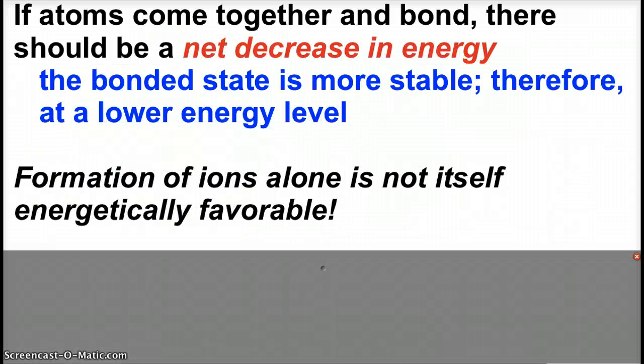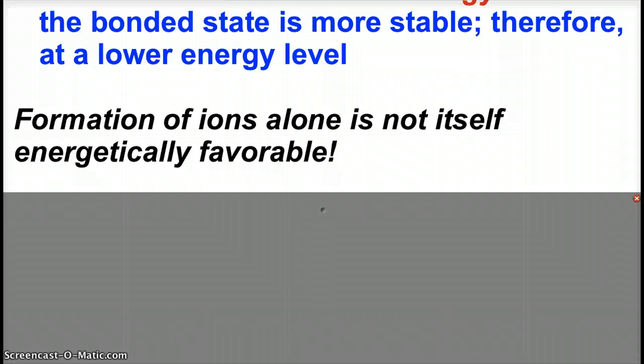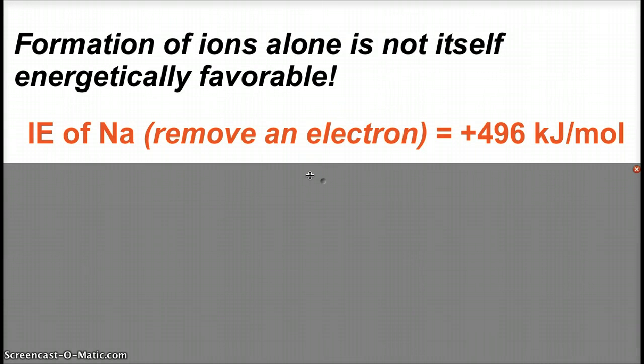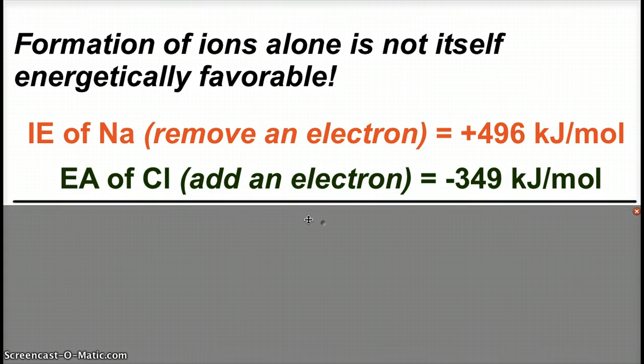Now, if atoms come together in bond, there should be a net decrease in energy. Because the bonded state is typically more stable, therefore at a lower potential energy level. However, when we form ions, that action itself is not always energetically favored. So, if we look at this, the ionization of sodium, it takes energy to remove an electron from a sodium atom. In fact, it takes 496 kilojoules per mole. Now, for chlorine, to add an electron,